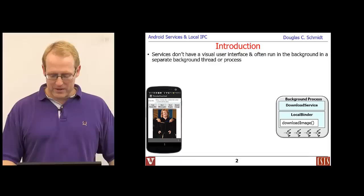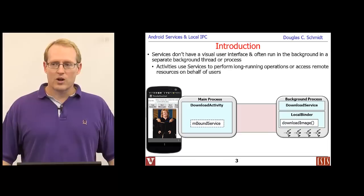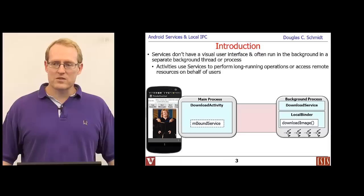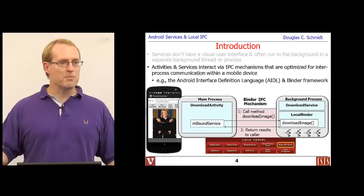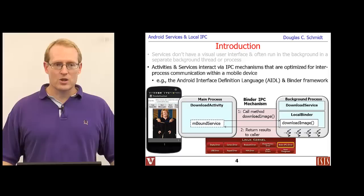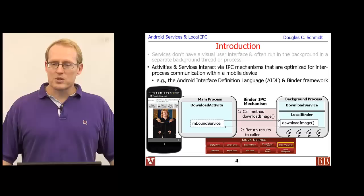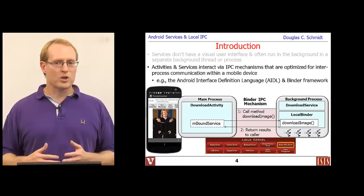Typically, activities are the things that invoke operations or send requests and intents to services to do work on the activity's behalf. There are other ways services can communicate as well, but that's one of the more common approaches. There are also a number of interesting inter-process communication, or IPC, mechanisms that allow activities and services — or different services — to talk to each other.